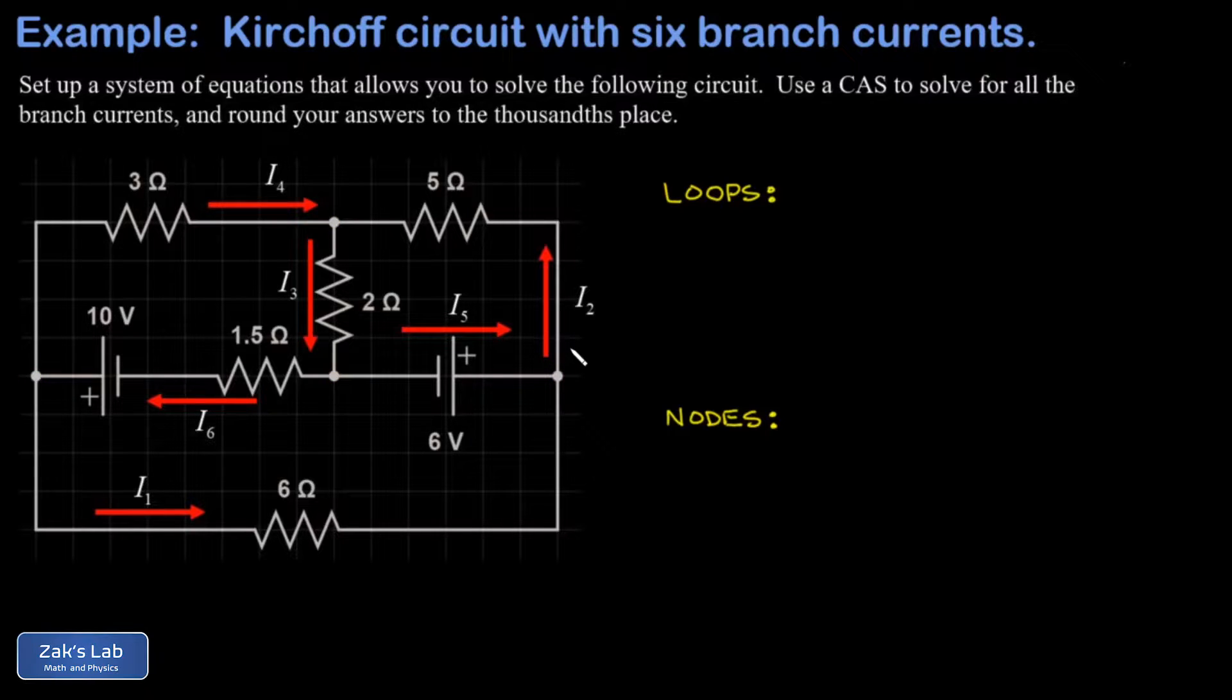So when we analyze the circuit using Kirchhoff's laws, we label all the branch currents. So every branch in the circuit gets labeled with a current. I've already done this in this problem. I have I1 through I6 for the six distinct branches in the circuit. So anywhere where current is allowed to split or combine, you have to label a new branch current. And then the loop analysis is a way of generating equations that relate these unknown currents. And the node analysis can give you more equations. And ultimately, what we're looking for is six independent equations for these six unknowns.